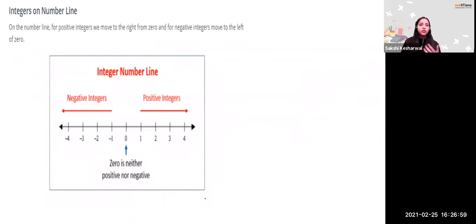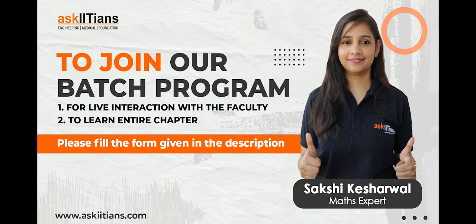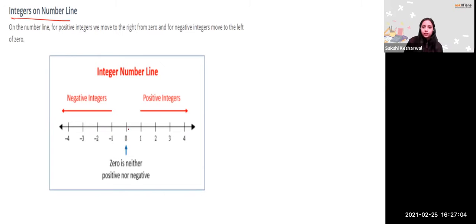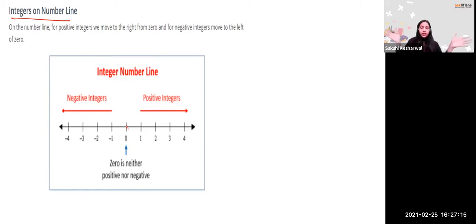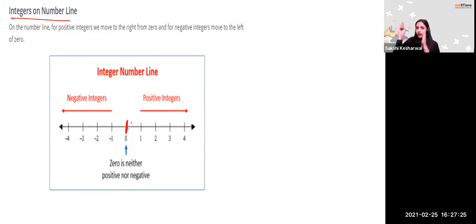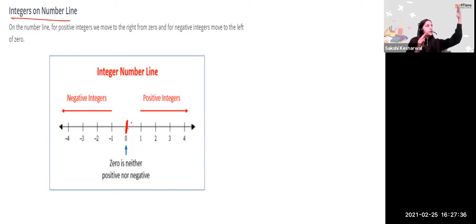Let's represent integers on the number line. Zero is in the middle. On the right-hand side are positive numbers; on the left-hand side are negative numbers. The points are equidistant — if you go one meter left from zero, you reach minus 1; one meter right, you reach 1. Two meters right gives you 2; two meters left gives you minus 2. Zero is neither positive nor negative.